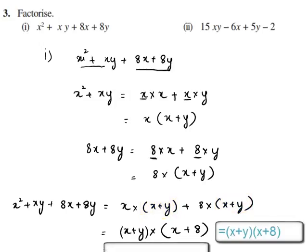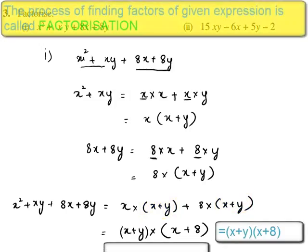So x plus y times x plus 8 is the required factor form and the irreducible factors of the given expression are x plus y and x plus 8.